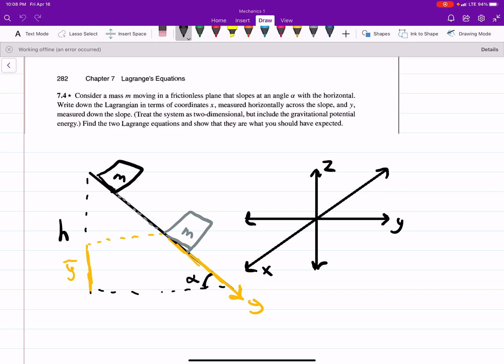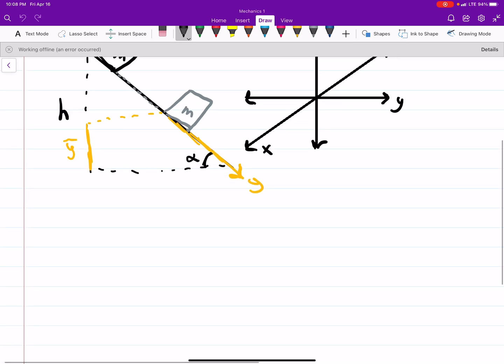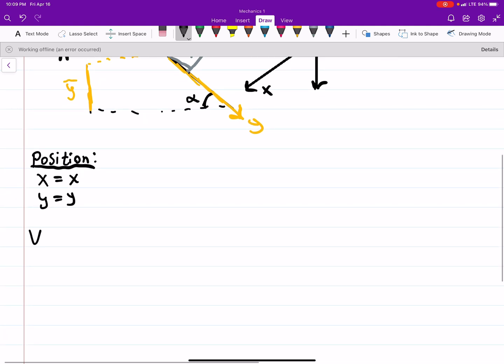Now let's do our position like we always do, in terms of x and y. That just means x is equal to x, y is equal to y. And the velocities, we just need to take the time derivative. So x dot is equal to x dot, y dot is equal to y dot.